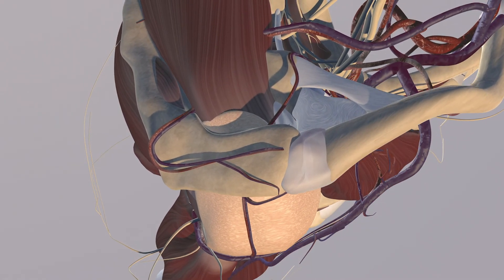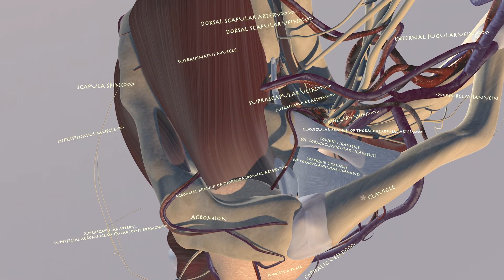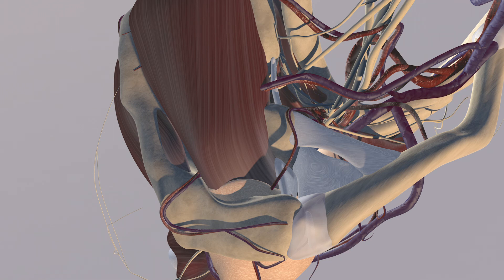You can also appreciate the superficial acromioclavicular joint branch from the suprascapular artery. Now we're going to take a bird's-eye view of the shoulder. You can see the clavicle articulating with the acromion, and you can appreciate the coracoclavicular ligaments consisting of the conoid ligament as well as the trapezoid ligament laterally. You can also see the suprascapular vein and artery which feeds into the supraspinatus muscle.